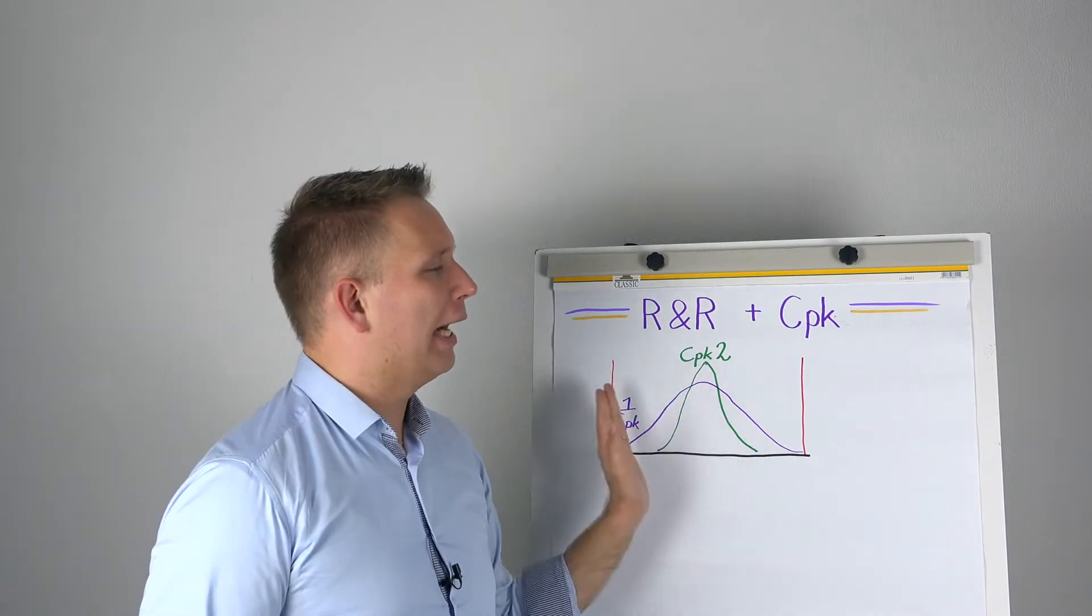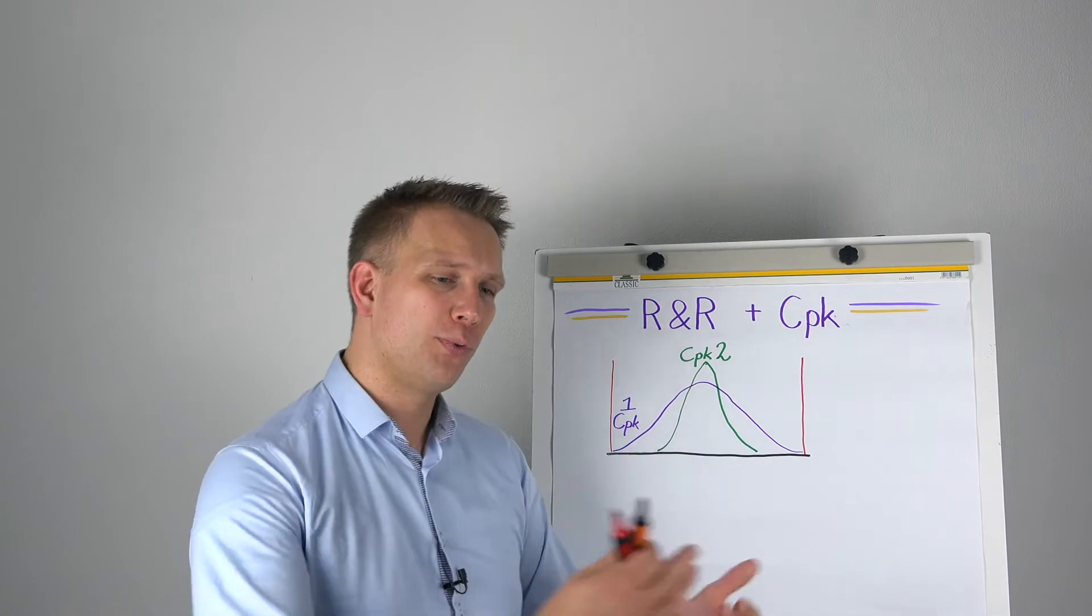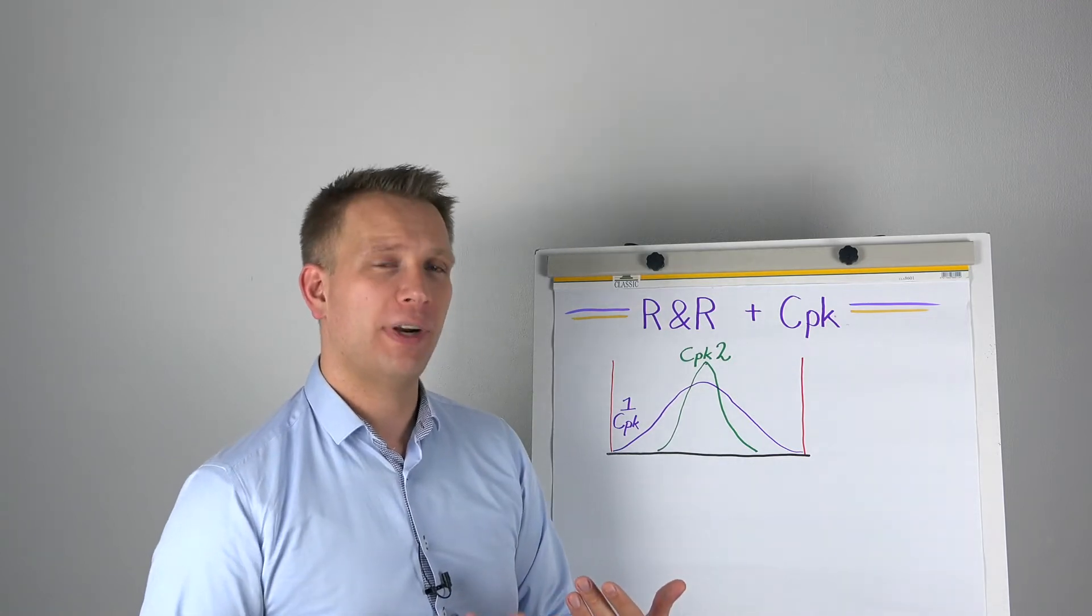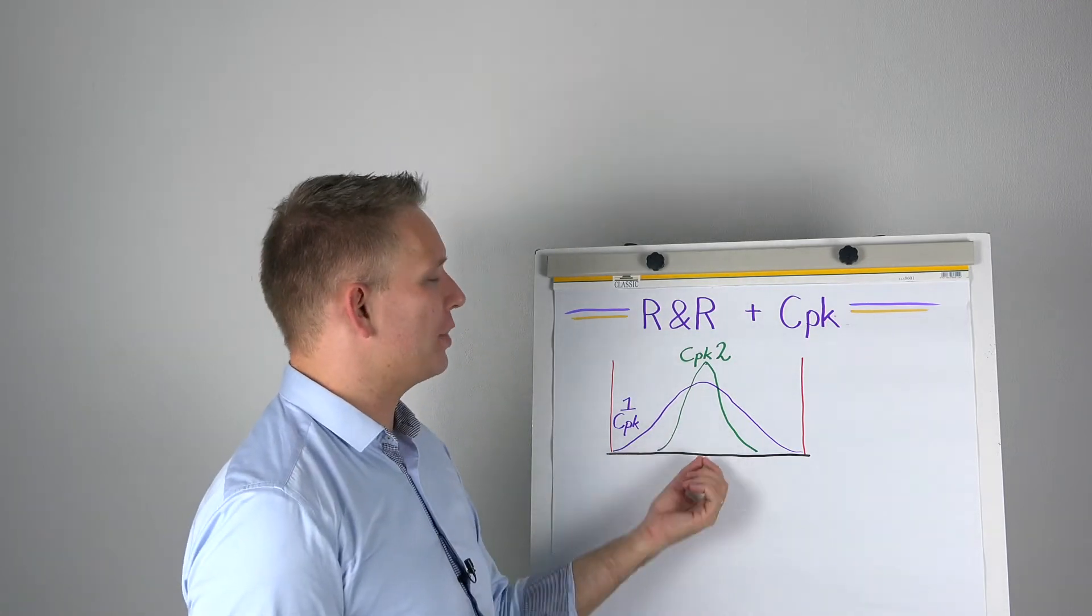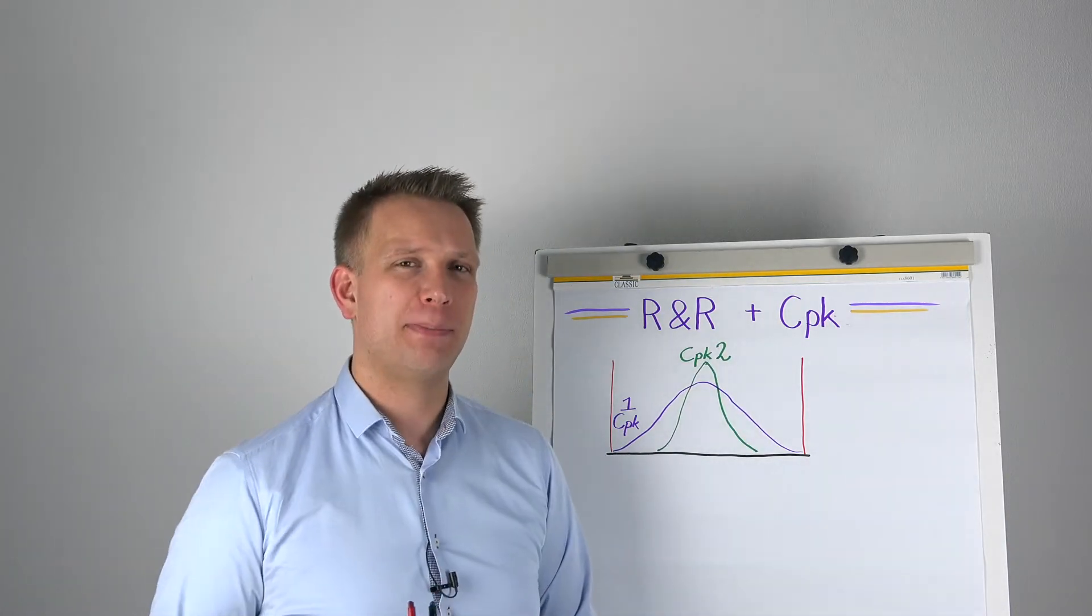The thing is, our process might move a bit. And before we see that it has moved and before we've taken corrective actions, a process with a lower CPK may have already generated a defect. That's the main reason to get a high CPK.